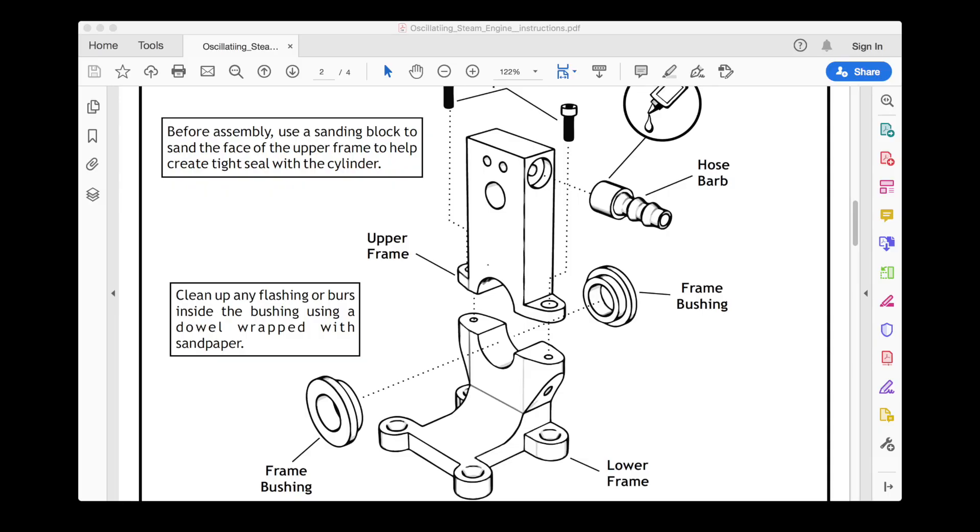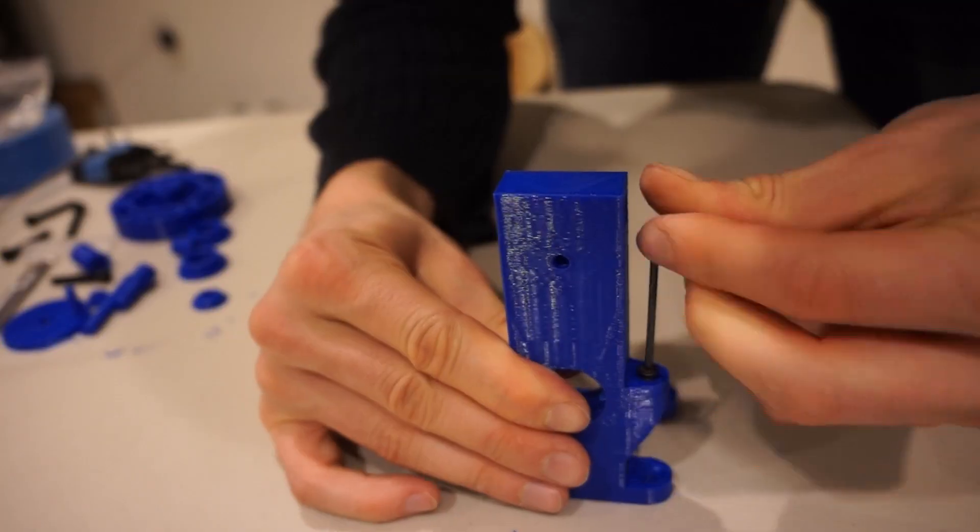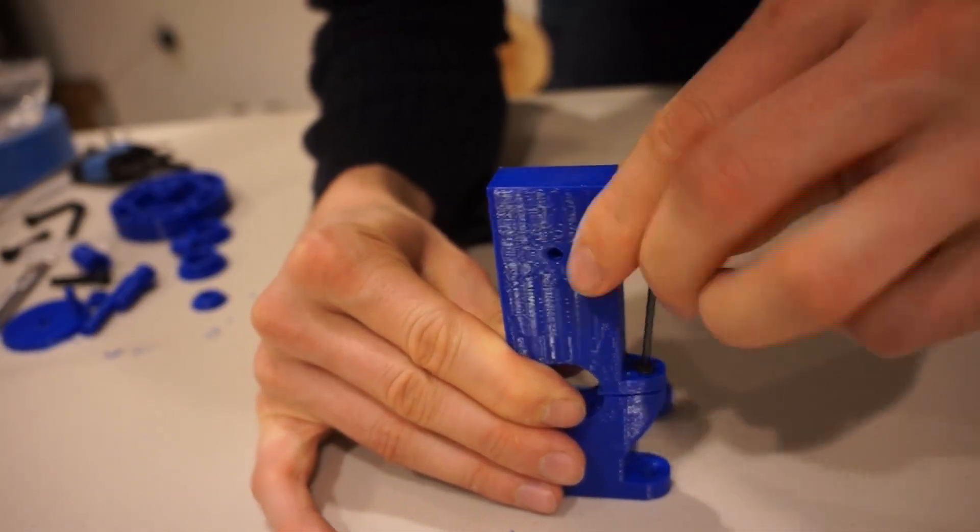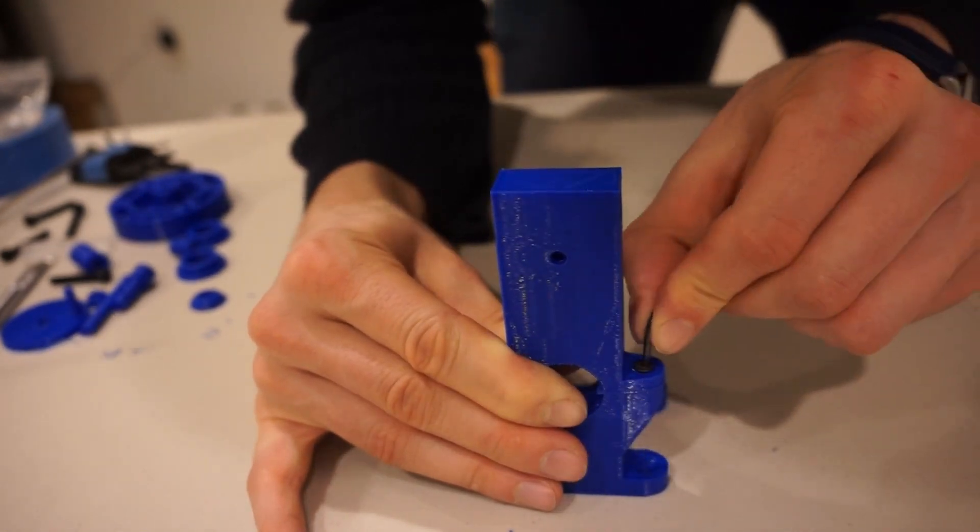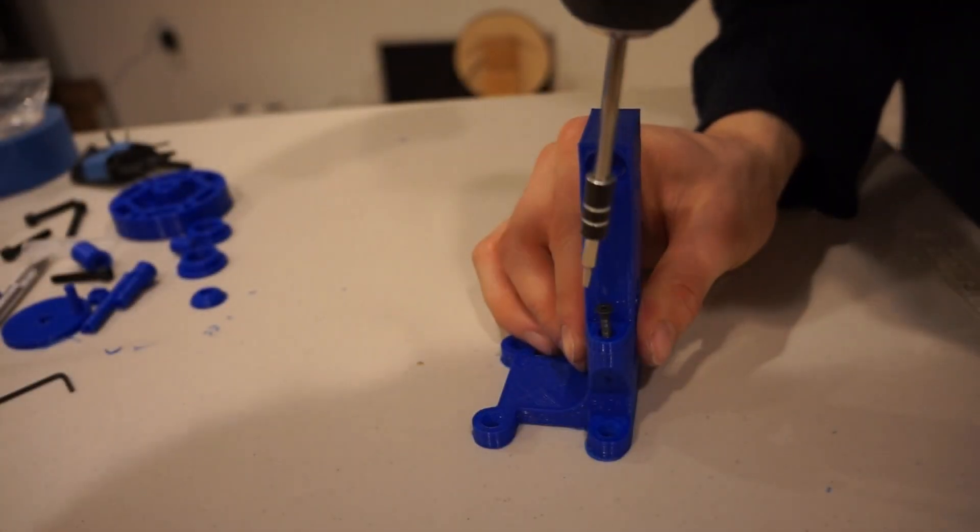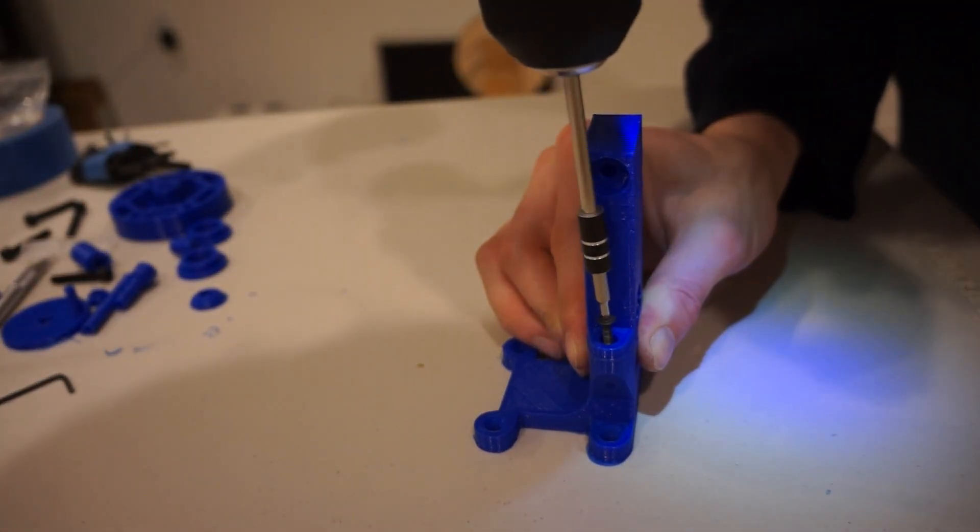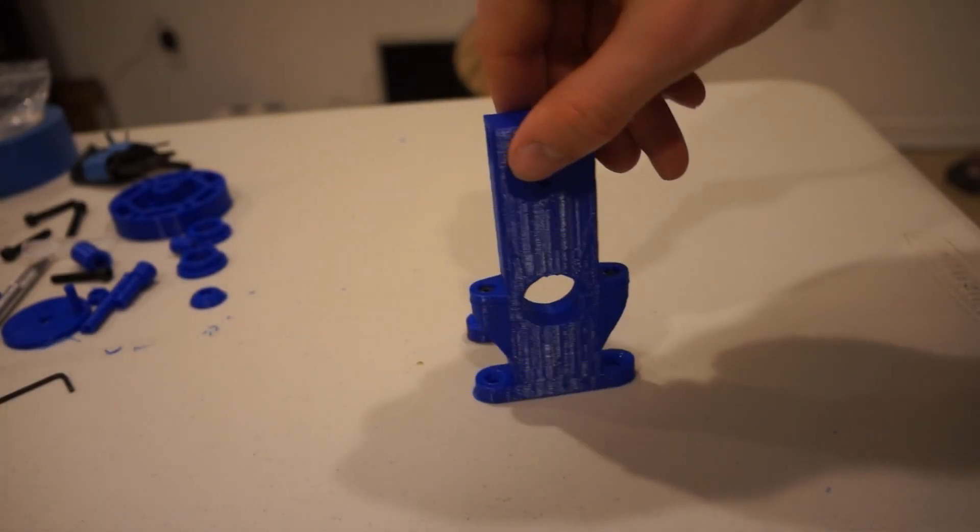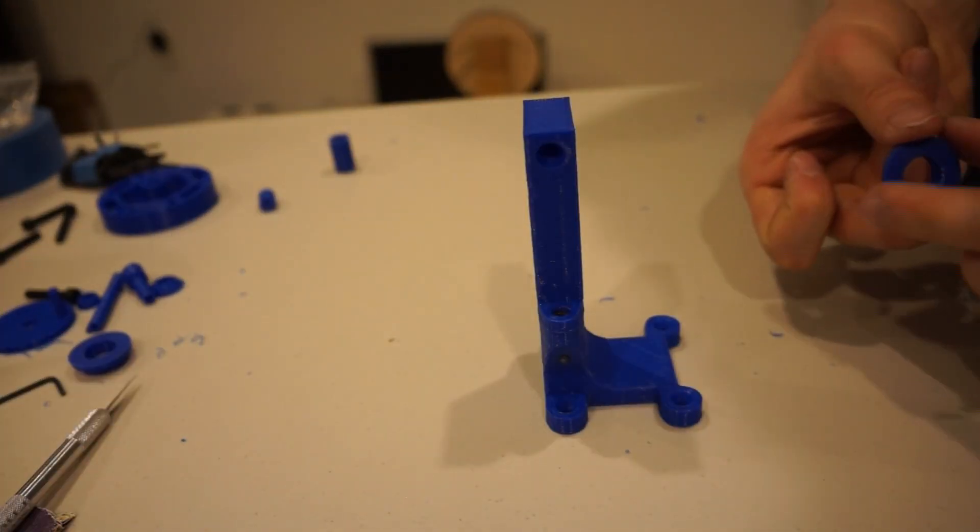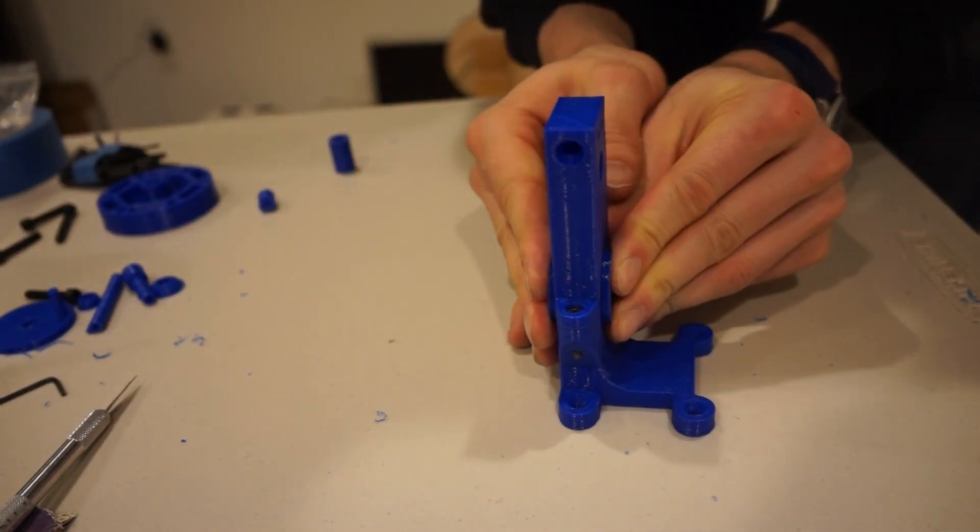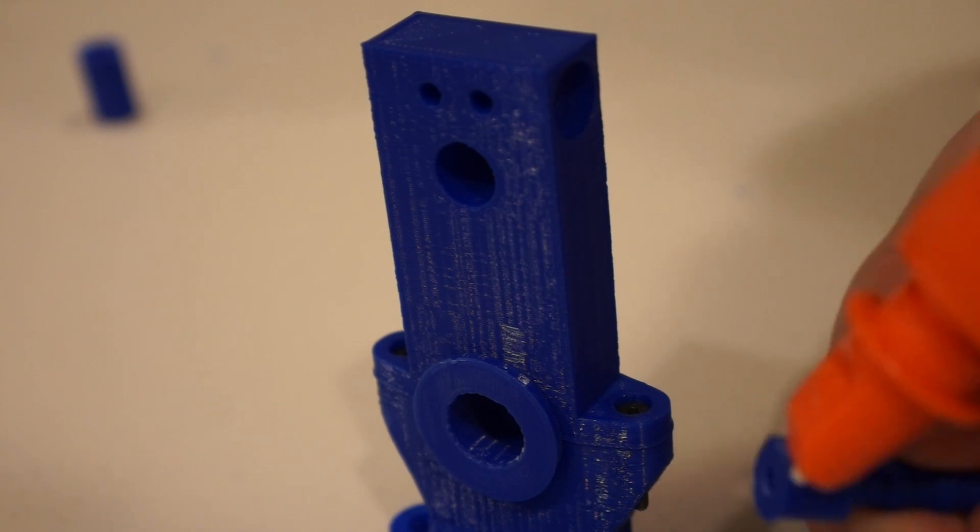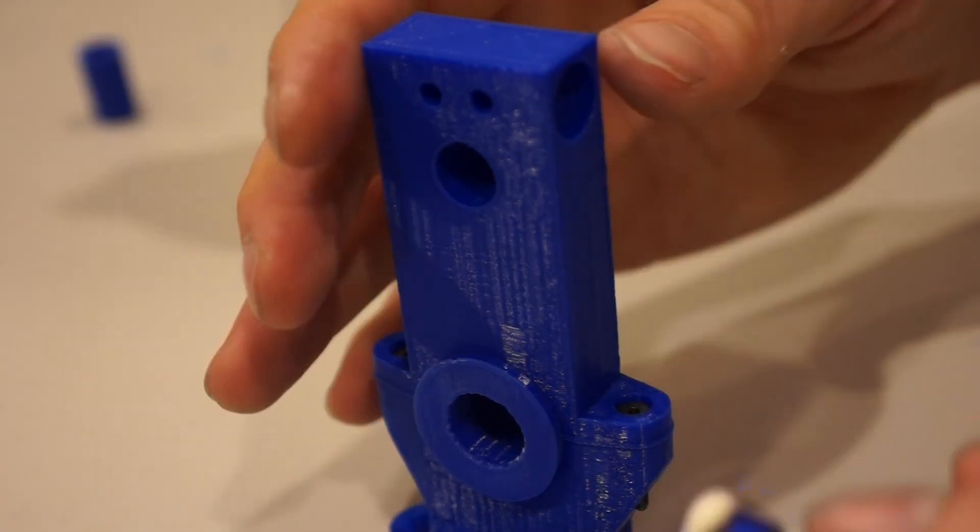Now onto the assembly. We'll use some 3mm screws to attach the upper frame to the lower frame. I think a drill will make this go a bit quicker. Then we'll pop in the bushings. Then we'll jam this bit into the engine's ear. Let's call him Steve.